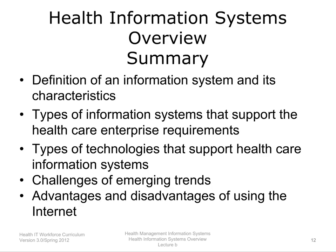This concludes Health Information Systems Overview. This unit defined an information system and its characteristics, identified the types of information systems that support the healthcare enterprise, and described the various types of technologies that support healthcare information systems. The unit also described challenges with the use of emerging information technology trends, including concerns with privacy and security, risk of liability, lack of law or legislation governing the boundaries, lack of payment for engagement, and resistance by healthcare providers. The advantages and disadvantages of the Internet as a platform for healthcare applications were also discussed.